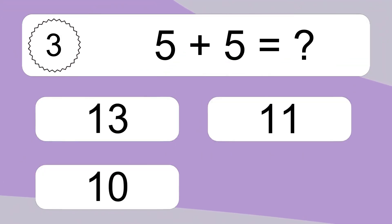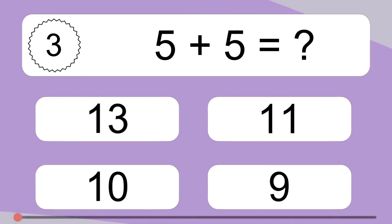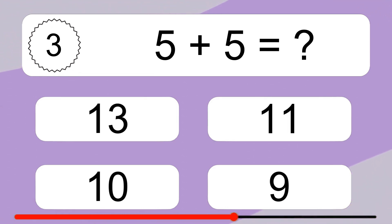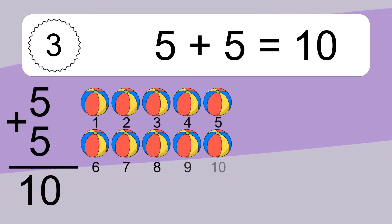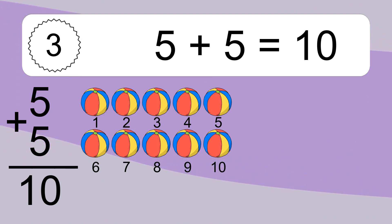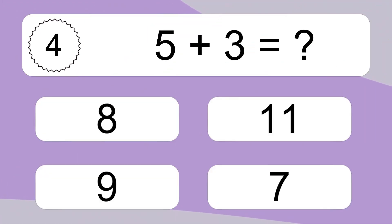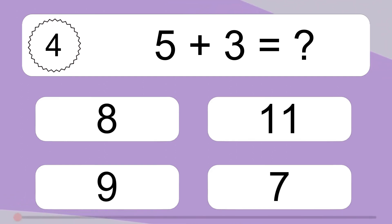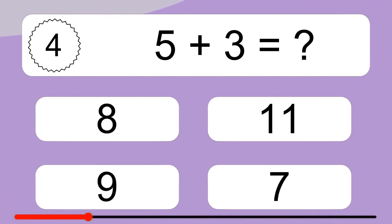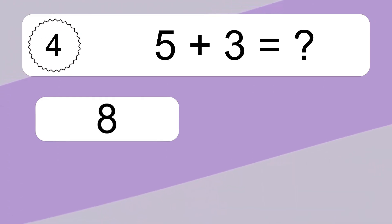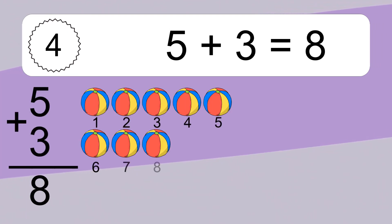5 plus 5 equals what? 5 plus 5 equals 10. Let's count it. 1, 2, 3, 4, 5, 6, 7, 8, 9, 10.